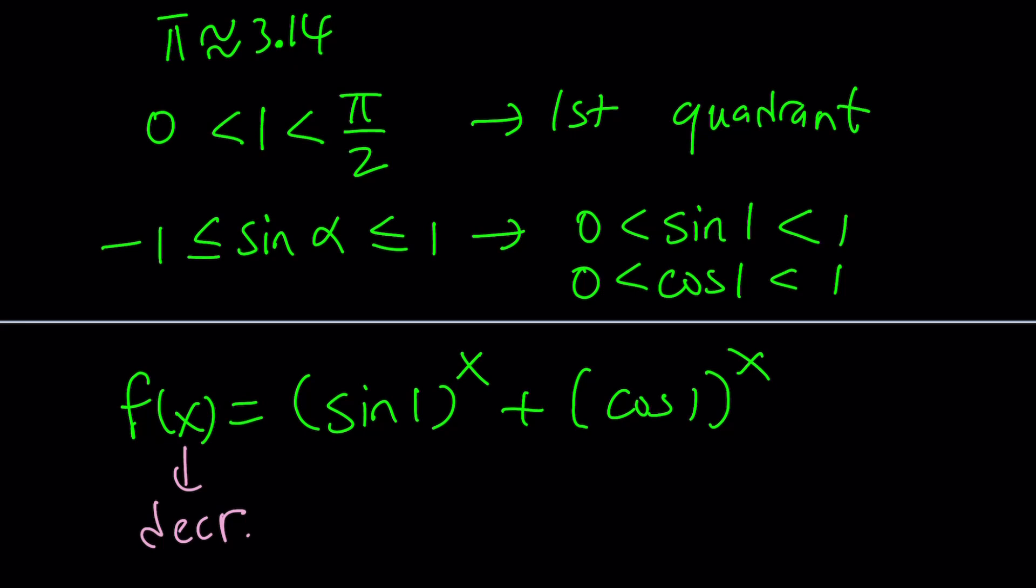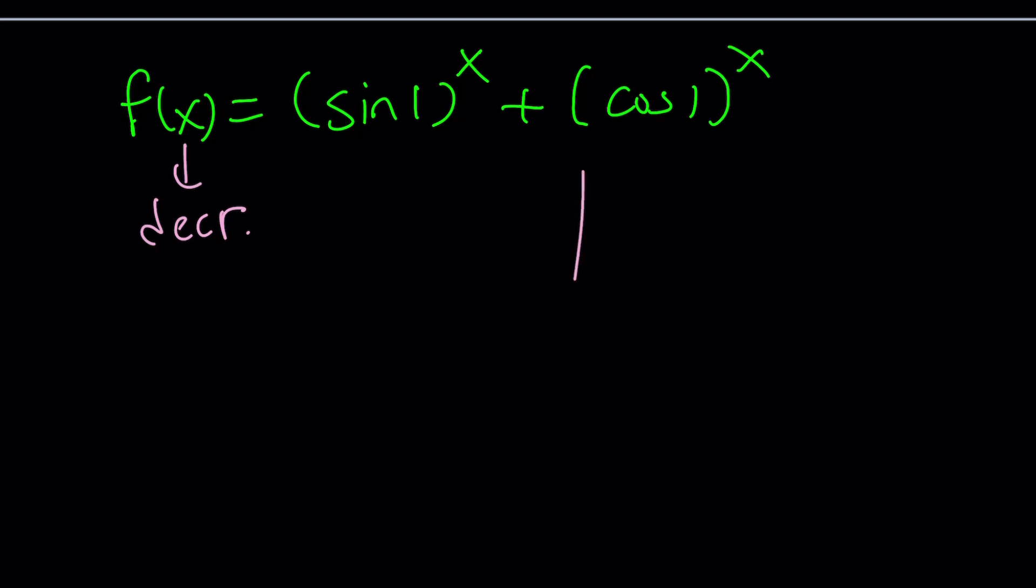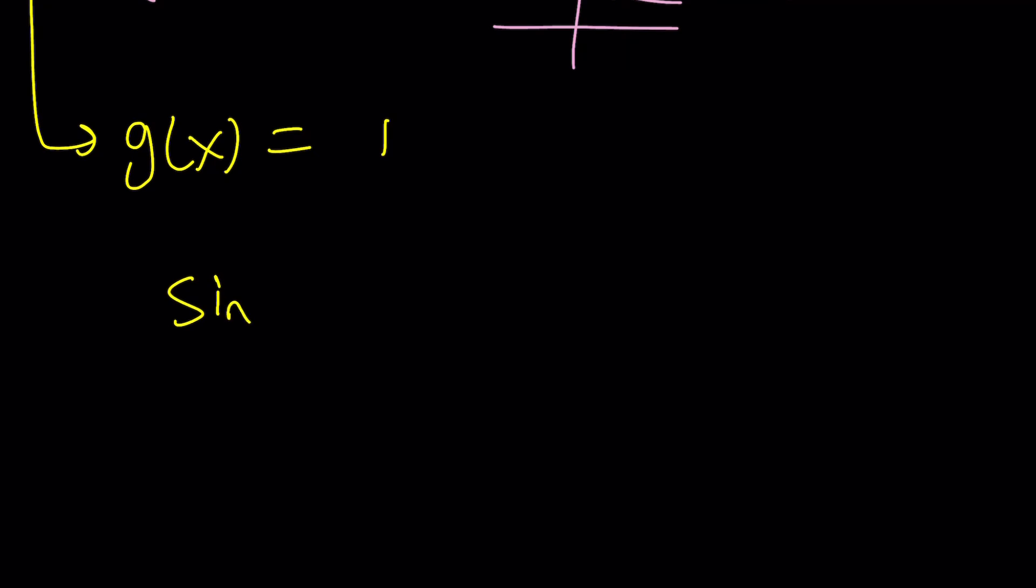Okay, great. So what does that mean, though? So if you have a decreasing function, it's going to intersect a horizontal line at a single point, right? What is the horizontal line? y equals 1. Or you can call that g of x equals 1. So they're going to intersect at a single point. I wonder what that point is going to be like, right? Sine 1 to the x plus cosine 1 to the x equals 1.